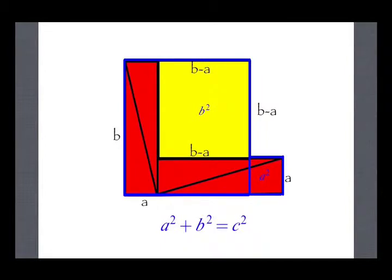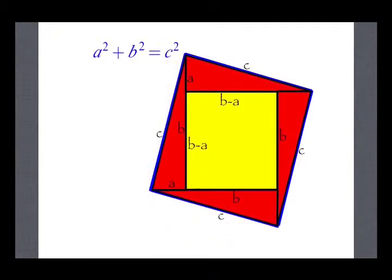Thus, we have proved that the sum of the squares of the two legs of a right triangle equals the square of the hypotenuse, or A squared plus B squared equals C squared.